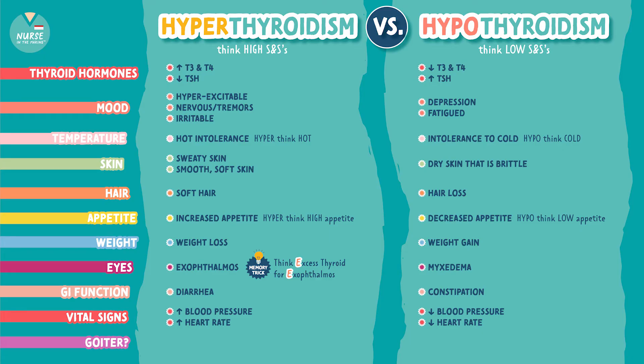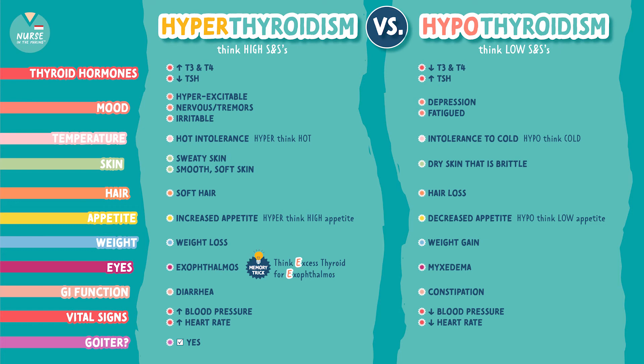Clients with hyperthyroidism will have a goiter — an enlarged thyroid gland. The thyroid is producing too much thyroid hormone and working overtime, which makes it enlarged. For hypothyroidism, a goiter may or may not be present, but the important thing to know is that a goiter is a classic symptom of hyperthyroidism.